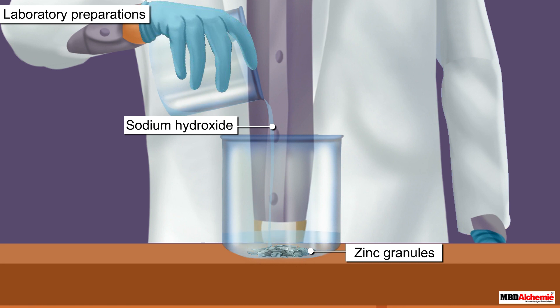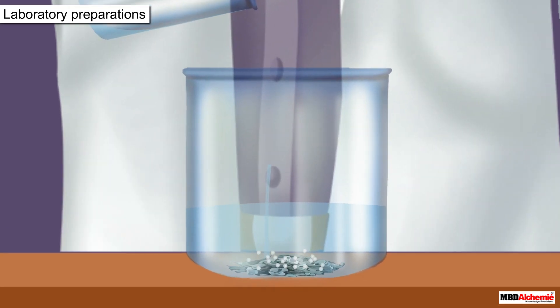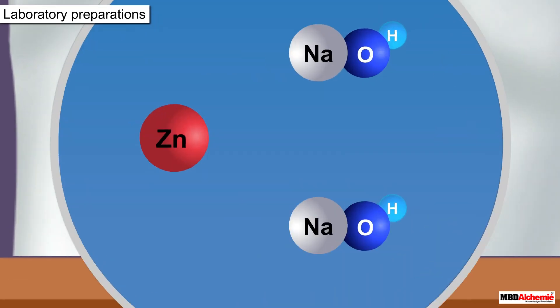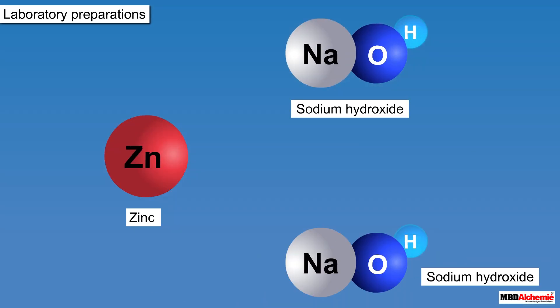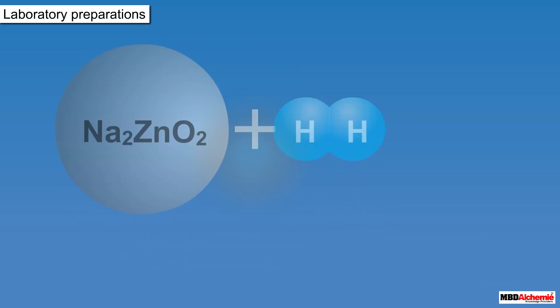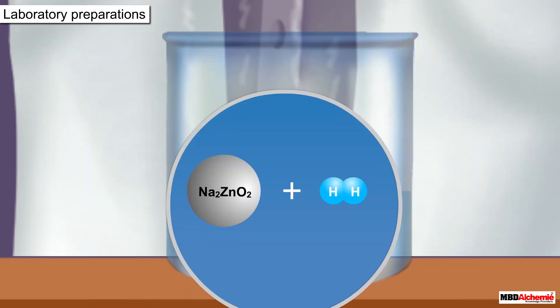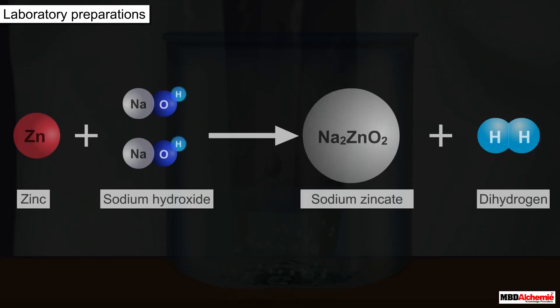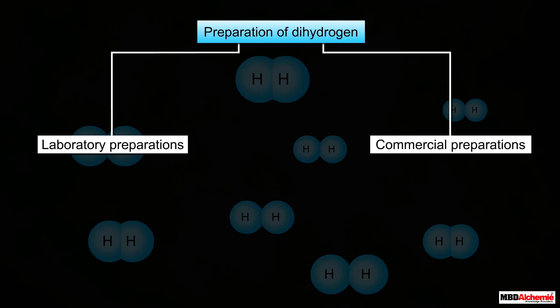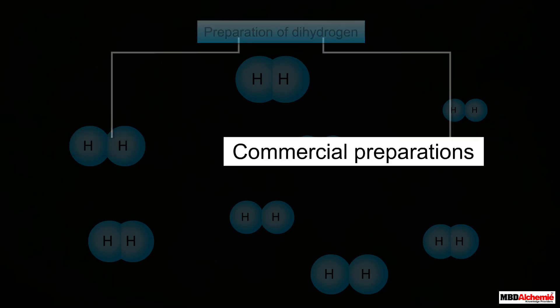Dihydrogen can also be prepared in the laboratory by the reaction of zinc with an alkali such as sodium hydroxide. When sodium hydroxide reacts with zinc, it forms sodium zincate and hydrogen gas.